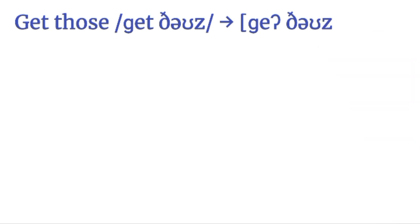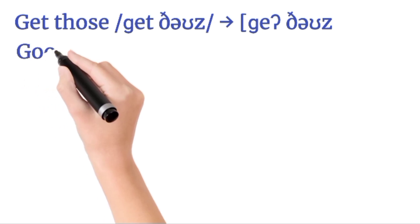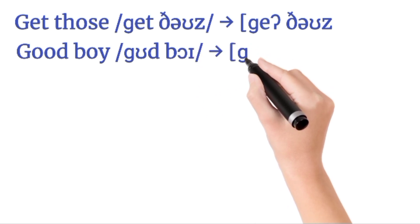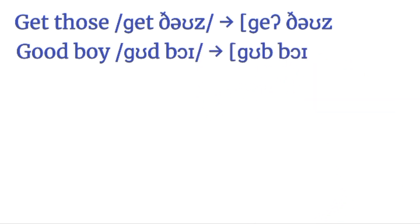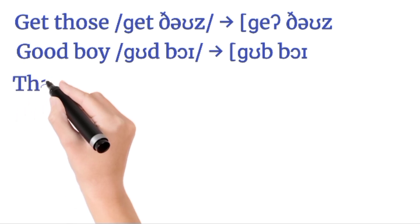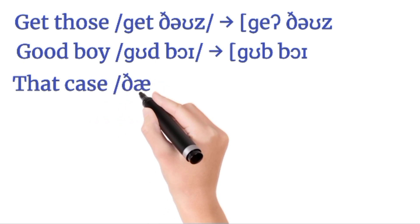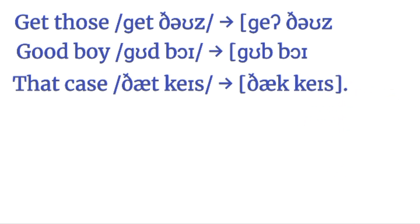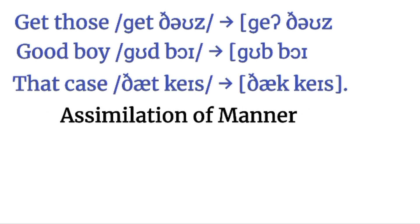Next example: 'get those' — in rapid speech we say 'geh those,' dropping the T and taking in the next sound. Then 'good boy' — in rapid speech, the first word's final sound is dominated by the initial sound of the second word, so we say 'goob boy.' Another example: 'that case' — T is affected by K, so we say 'thak case.' Native speakers often skip difficult sounds to become more fluent in speech.